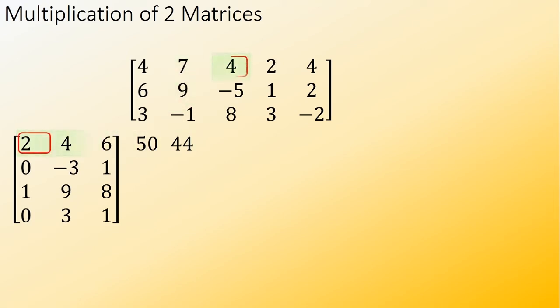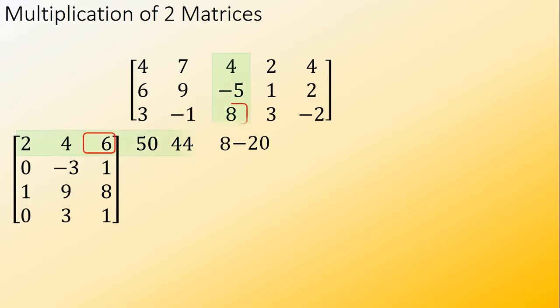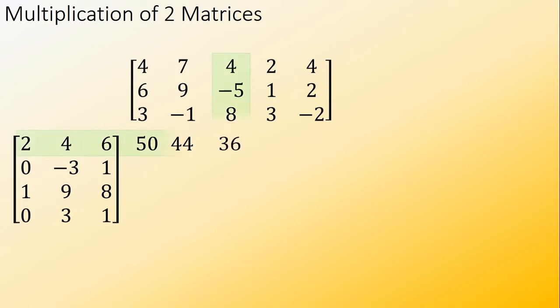Next: 2 times 4 equals 8, 4 times negative 5 equals negative 20, 6 times 8 equals 48, and then adding them equals 36.